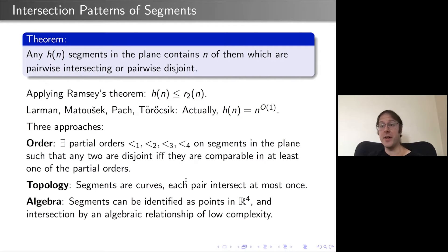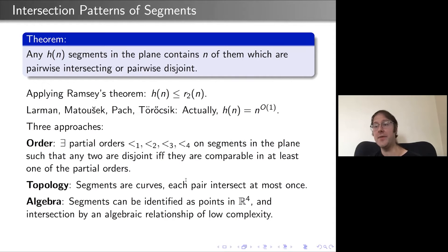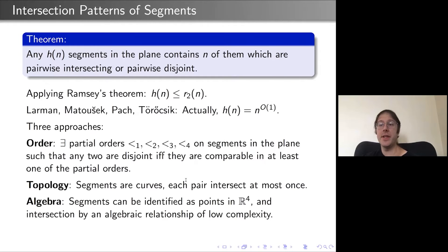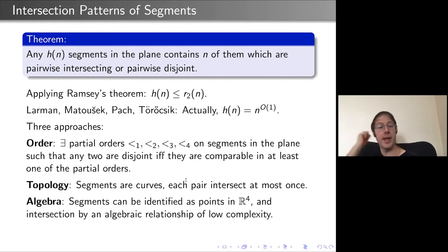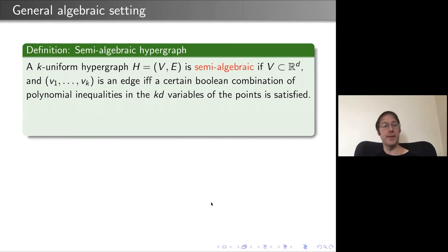Another natural approach is combinatorial: intersection graphs of segments are naturally hereditary — the family of intersection graphs is closed under induced subgraphs. There's a famous conjecture of Erdős and Hajnal that says just under this condition you can get a polynomial type bound. We'll talk about that more later.